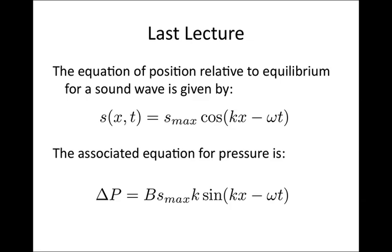A very quick recap of the most important points from last lecture. We showed that the equation of position relative to equilibrium for a particle which a sound wave was passing by is given by s(x,t), the displacement from equilibrium, equal to s_max, the maximum displacement, times cos(kx − ωt). The associated equation for pressure is: the change in pressure equals B, the bulk modulus, times s_max times k times sin(kx − ωt). It's important to note that one is a cosine function and one is a sine function, so these two things are out of phase by 90 degrees, or π/2 radians.